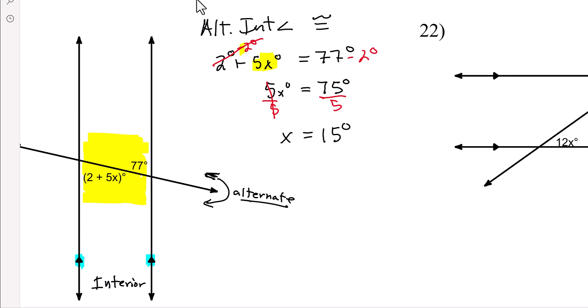So you only have to check it here. 5 times 15 is 75, 75 plus 2 is 77. So this angle right here is indeed 77, so this answer checks out.